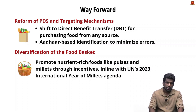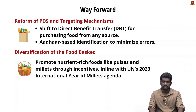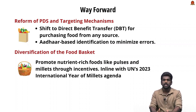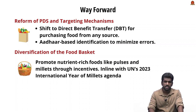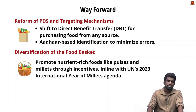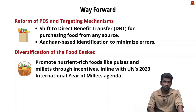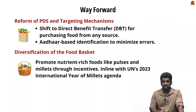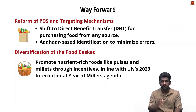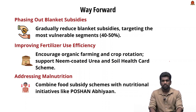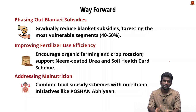For the way forward, there should be reform of the Public Distribution System and targeting mechanisms. A shift towards Direct Benefit Transfer of food subsidies — allowing beneficiaries to buy food from any source rather than relying on government shops — would reduce leakages and increase efficiency. Diversification of the food basket by encouraging production and consumption of nutrient-rich foods like pulses, coarse grains, and millets through incentives can make the food subsidy system more nutrition-sensitive.